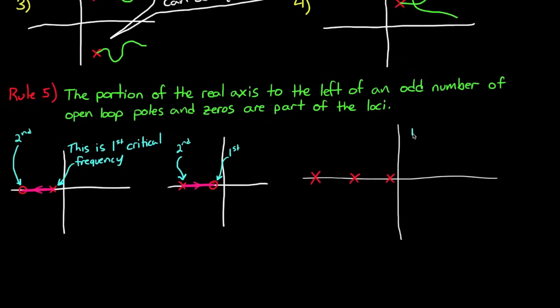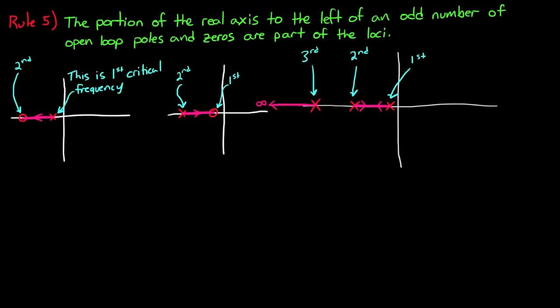Now in this third example, I have three critical frequencies. And just like before, the locus exists to the left of each of the odd ones. You'll notice though that to the left of the third critical frequency goes off until infinity, because there are no other critical frequencies there. But between the first and second, that locus both converges into a point in between the two. And I'll explain in the other rules what happens when these two roots come together. Where do they go?